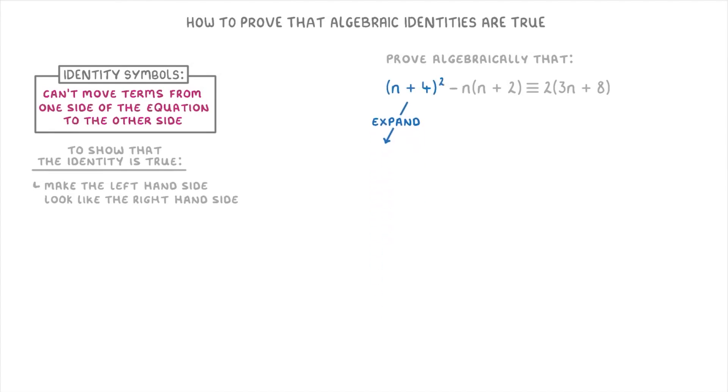To start, let's expand the n plus 4 squared. And remember, whenever you have a whole bracket being squared like this, it means that you have to multiply the whole bracket by itself. So we get n plus 4 times n plus 4, which multiplies out to give us n squared plus 4n plus 4n plus 16.